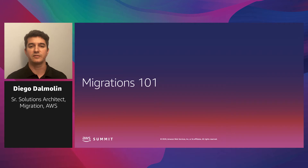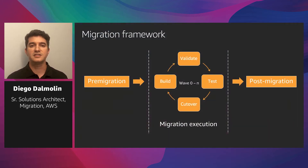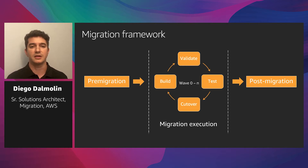Let's get started with an overview of migration projects. This is a simplified version of a migration framework. There are activities that should be executed as part of the pre-migration phase, such as discovering the environment, grouping servers in migration waves, creating a landing zone, defining the EC2 configurations such as instance type and size, subnets, and security groups. During this phase, you may need to validate if the servers and applications have all the prerequisites to run in AWS.